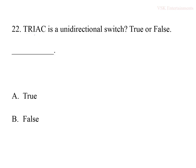The twenty-second question: TRIAC is a unidirectional switch — true or false? A TRIAC is a bi-directional triode thyristor where two thyristors are connected in anti-parallel. Current can flow from MT1 to MT2 or MT2 to MT1 — it is not unidirectional, it is bi-directional. So the answer is false.